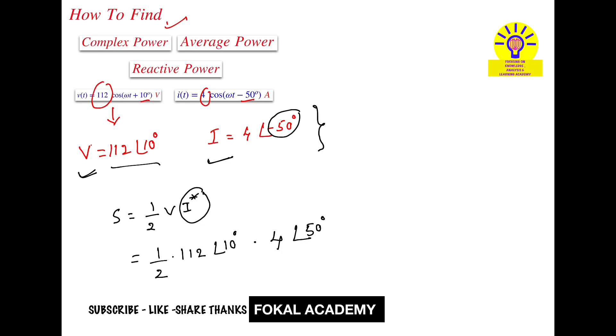Now, how to simplify here? These two phasor forms are going to multiply. Whenever multiplication is applied between two phasor forms, keep 1/2 as it is, take the product of their amplitudes—that is 112 × 4—and sum of phase angles.